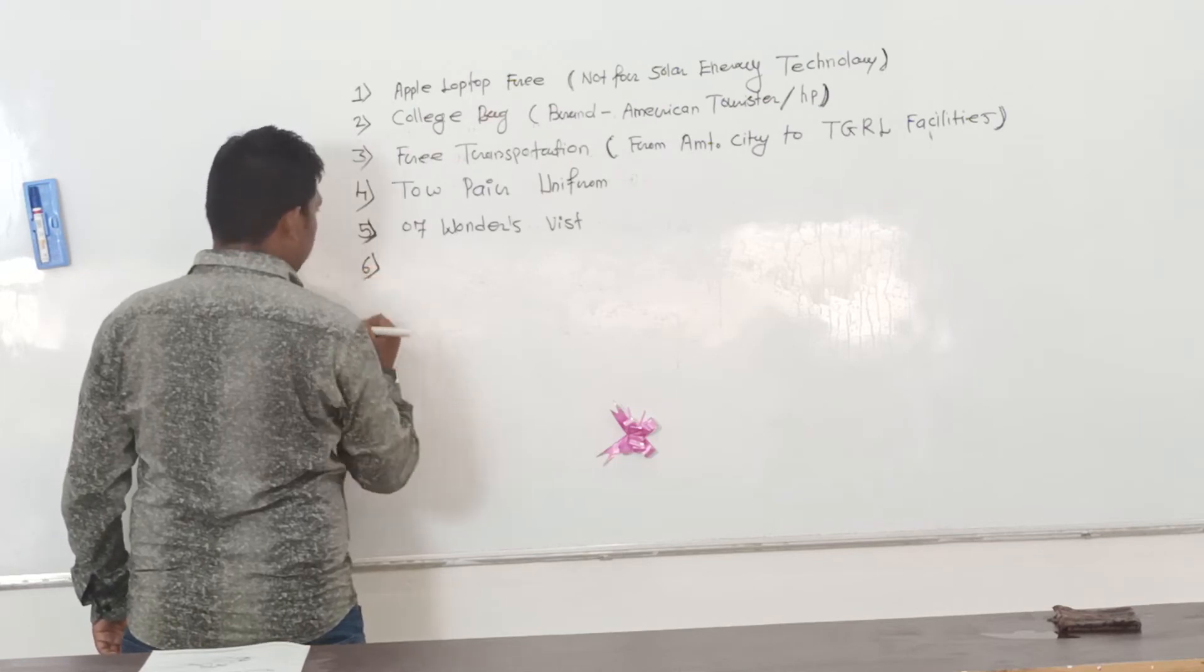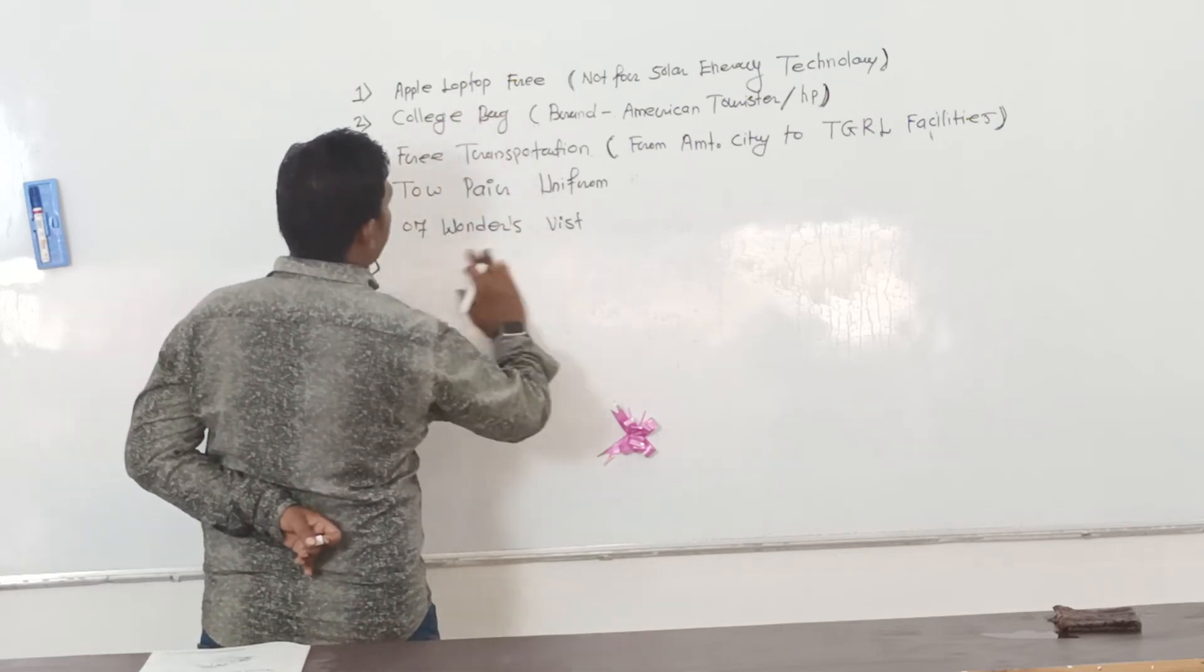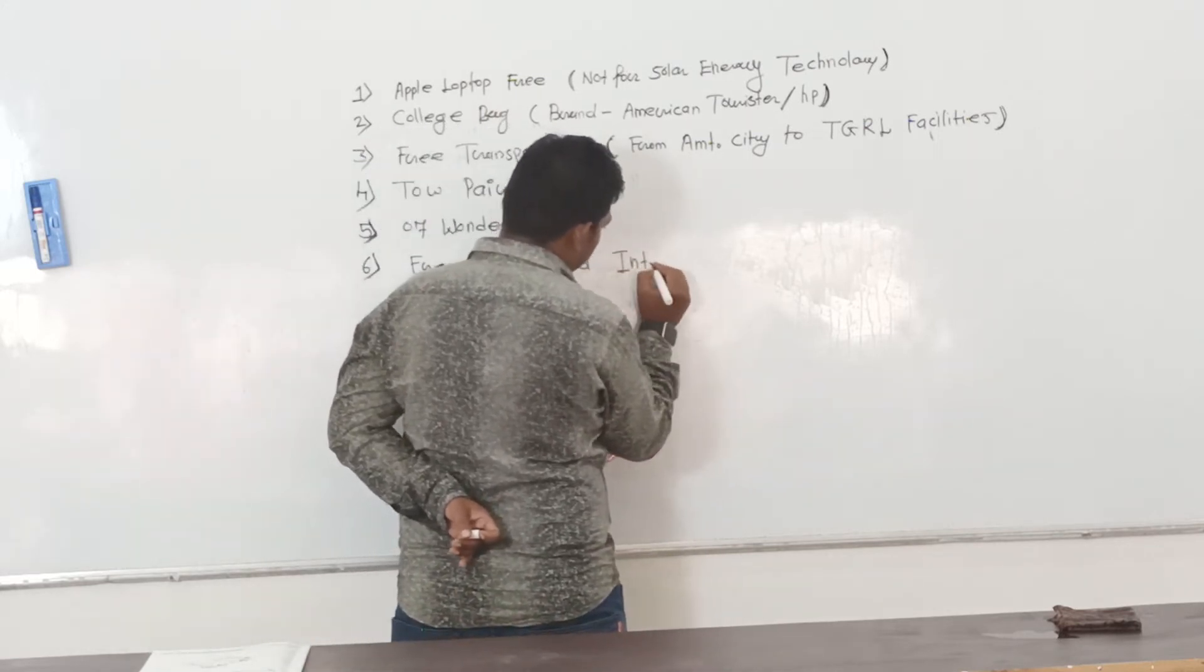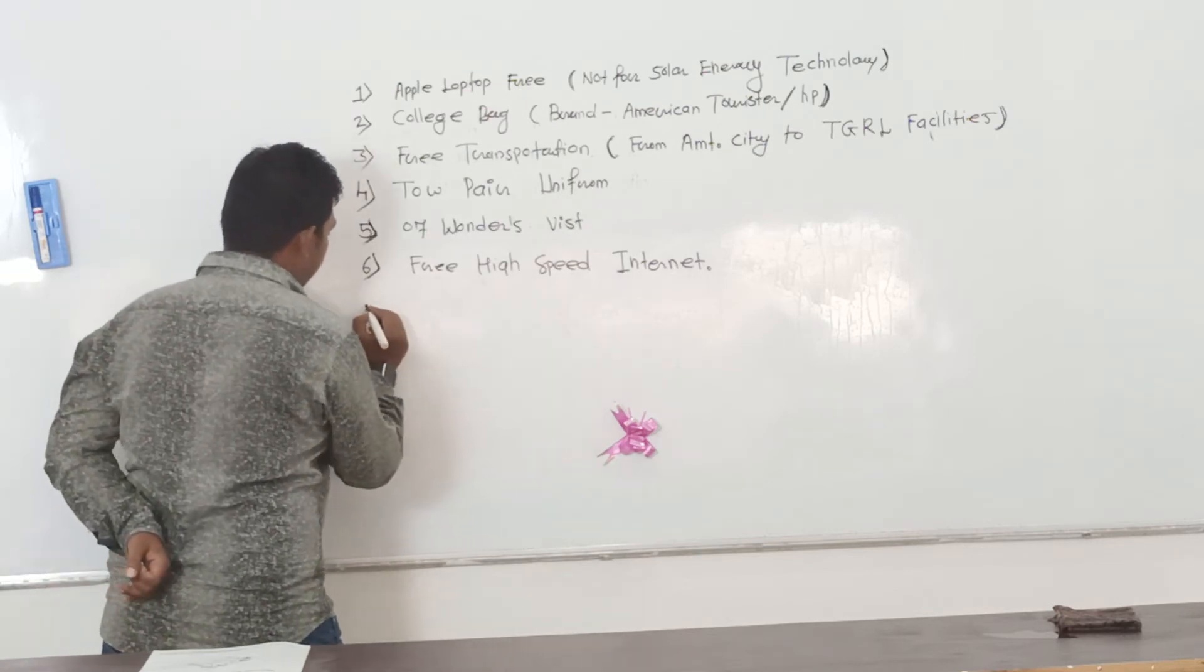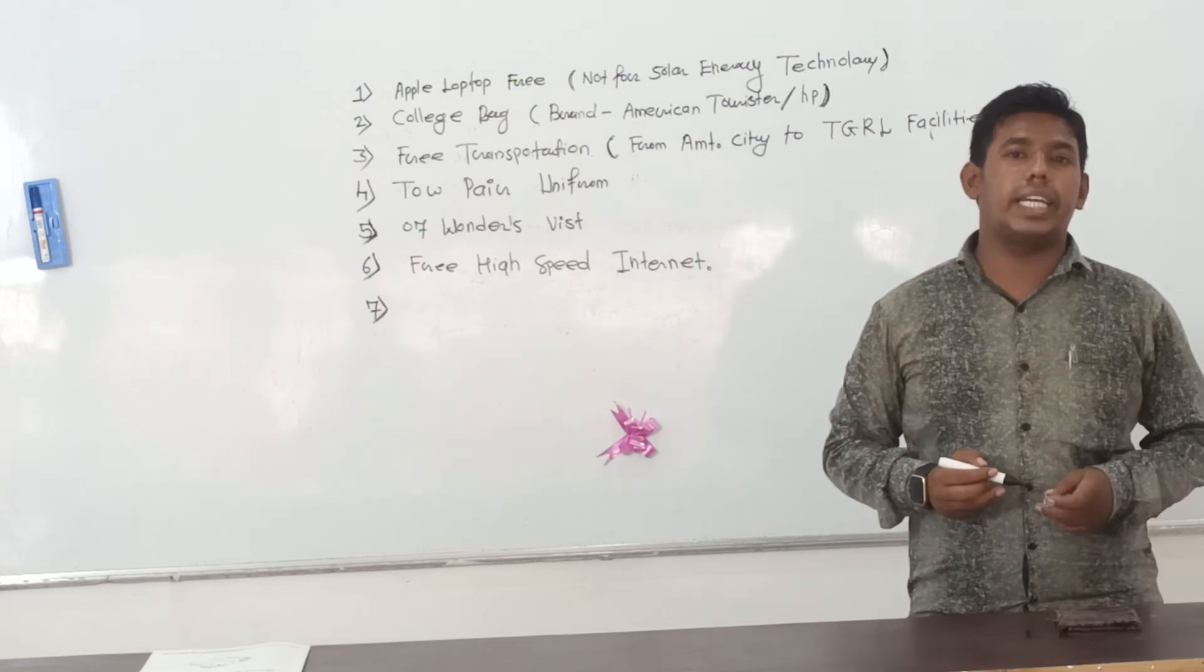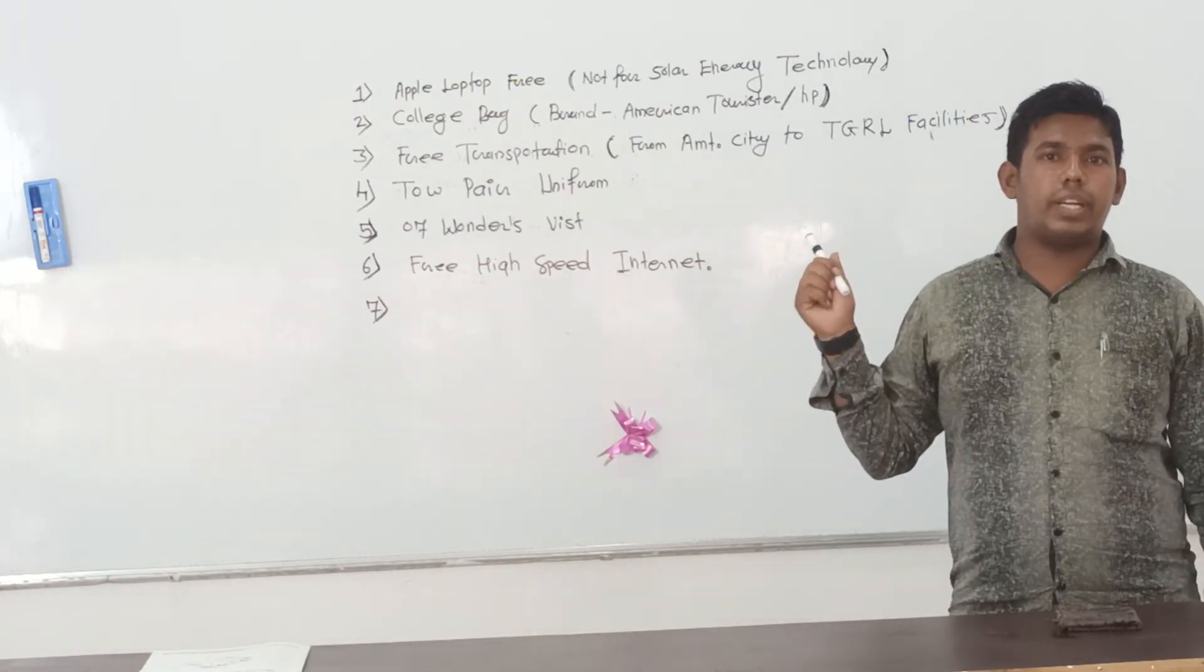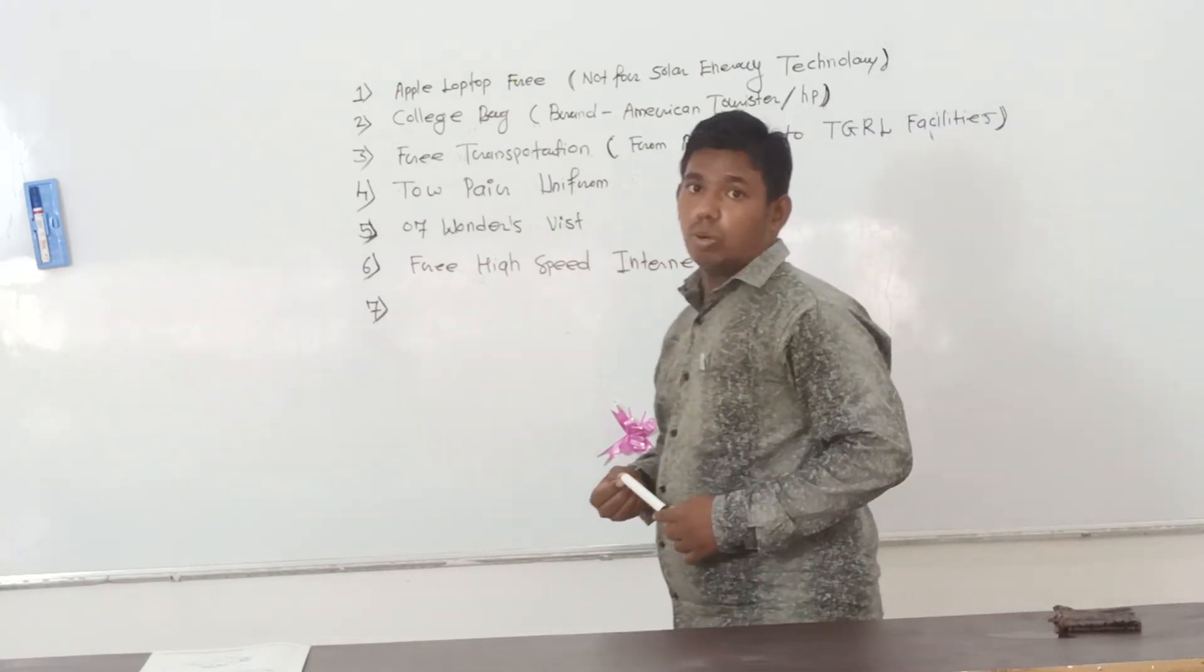So, six number, three high speed internet. Six one is three high speed internet and six. One important thing is that for solar students only, it will not be applicable free Apple laptop. And for the nine courses it will be applicable. So note this, note that this thing.